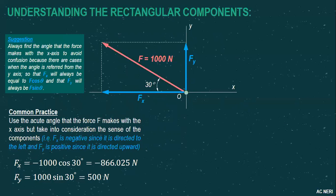A suggested approach to avoid confusion: always find the angle that the force makes with the x-axis, so that Fx will always equal F cosine theta and Fy will always equal F sine theta. If the angle is referred from the vertical, then Fy becomes the adjacent side, so Fy would be F cosine theta instead — so it depends on your preference.